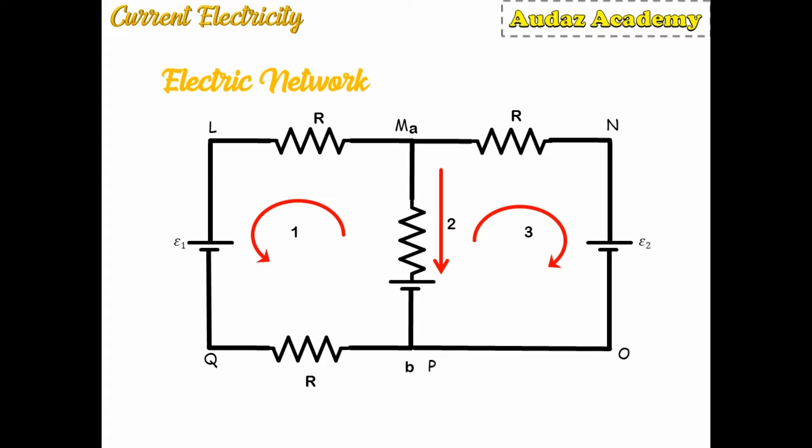The first terminology we are going to understand is a junction. A junction is a point where two or more electric conductors come together or are joined. In this electric network, point A and point B are junction points.